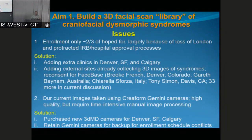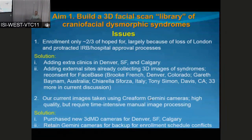All current images from our three main sites have been taken using CREOFORN Gemini cameras. These give very high quality but require very intensive manual image processing, and we really feel we need to get rid of that. We've purchased new 3DMD cameras for Denver, San Francisco, and Calgary — the order goes out today. Those images do not require post-processing, or very little, so that will eliminate a lot of hands-on work, and we can have more people spending more time taking pictures.